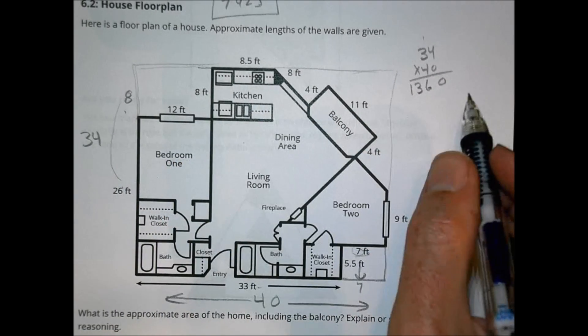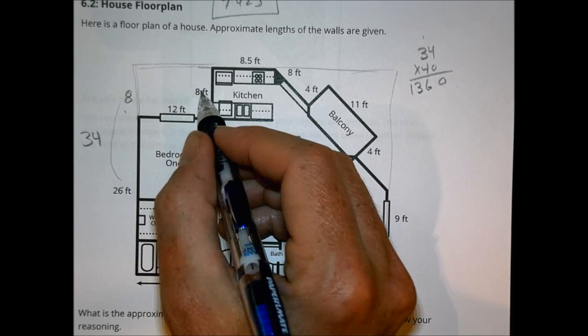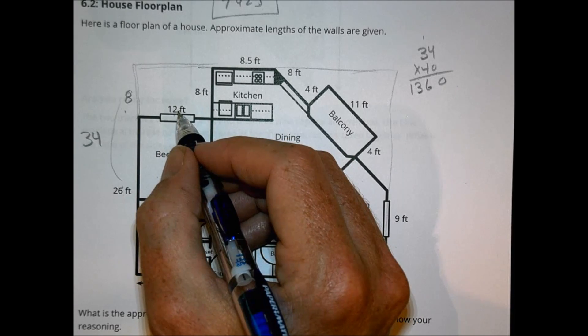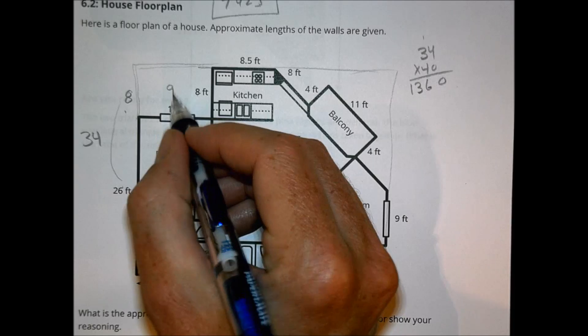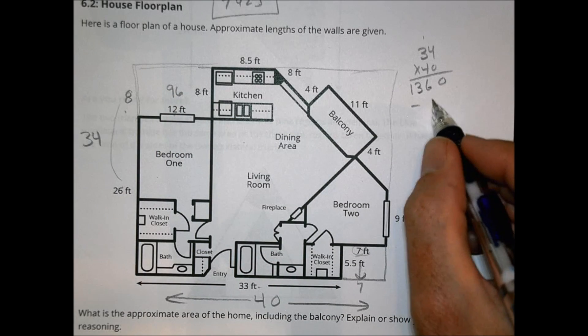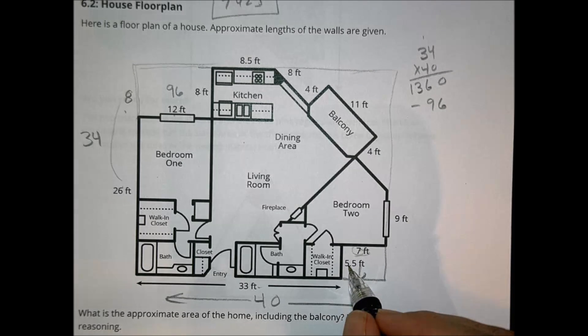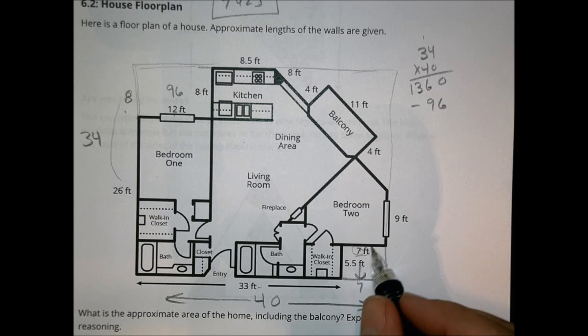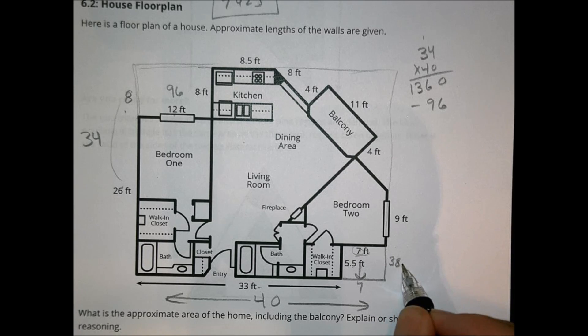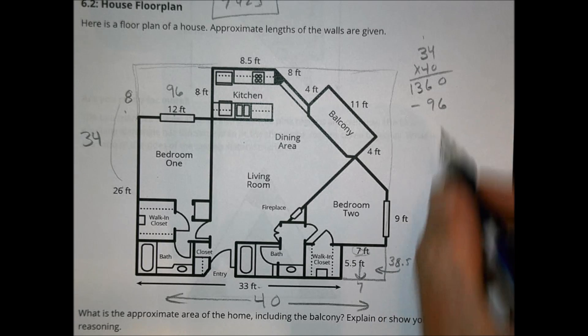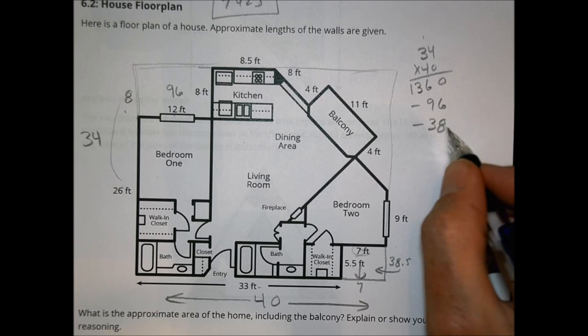So I'm going to take away, in this case here, I have to take away this chunk. This is a 12 by 8 rectangle. Well, 12 times 8 is 96. So I'm going to subtract 96. Over here, I have a 7 by 5.5. 7 times 5.5 is going to be 38.5 in that space there. So I'm going to subtract 38.5.